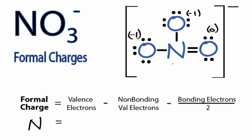Finally, for the nitrogen in the center, nitrogen on the periodic table, group 5 or 15, has 5 valence electrons. Non-bonding, well, all the valence electrons for nitrogen are involved in chemical bonds.